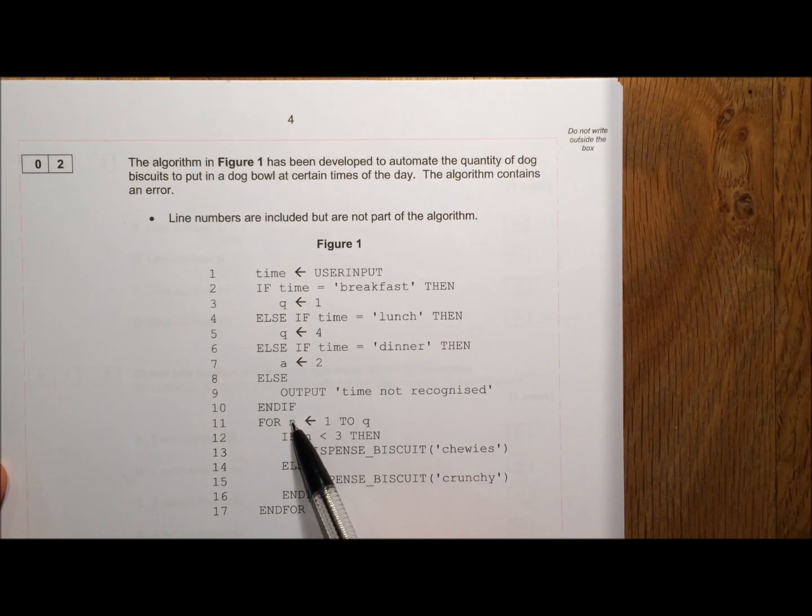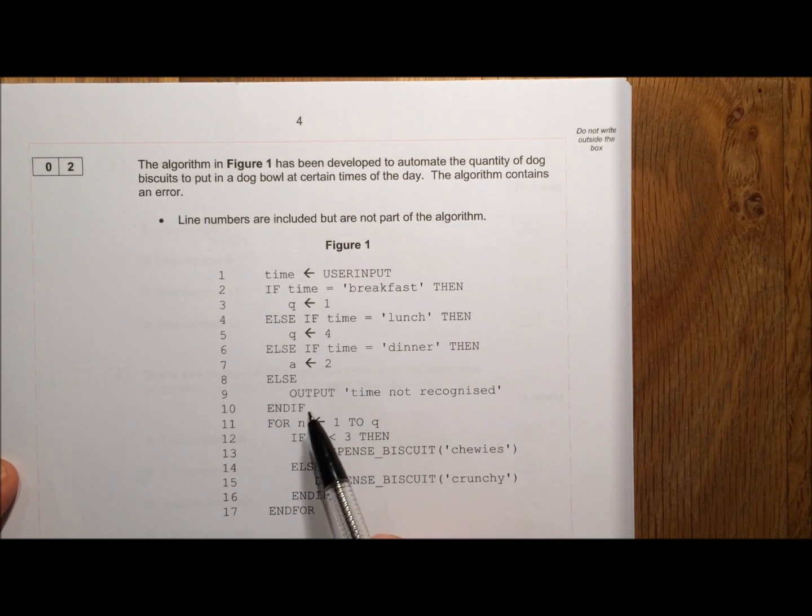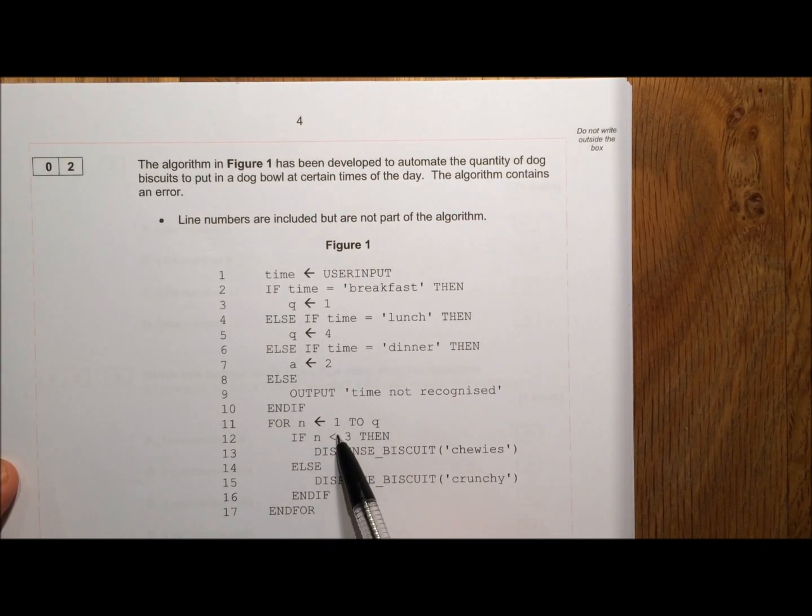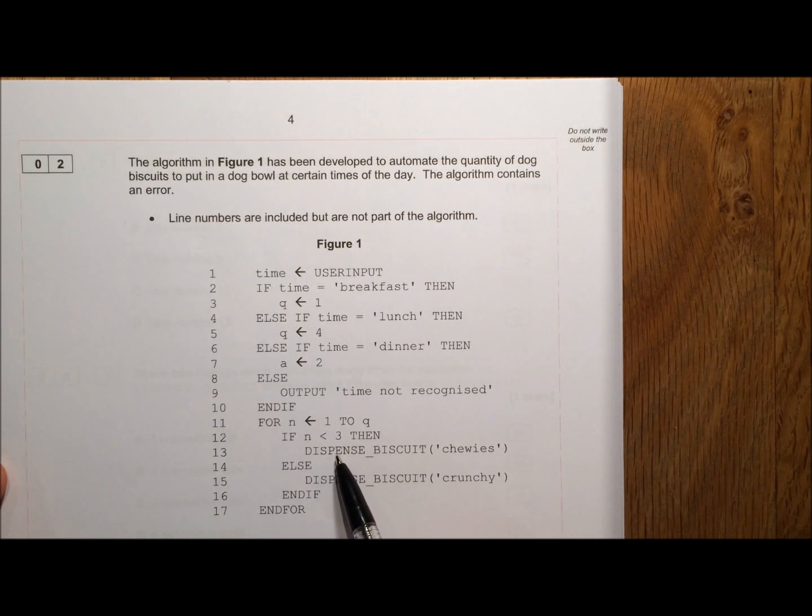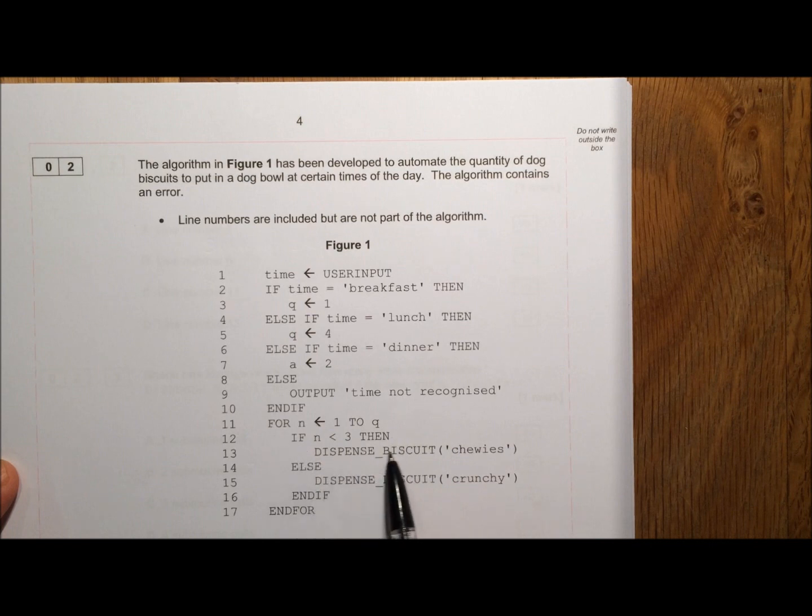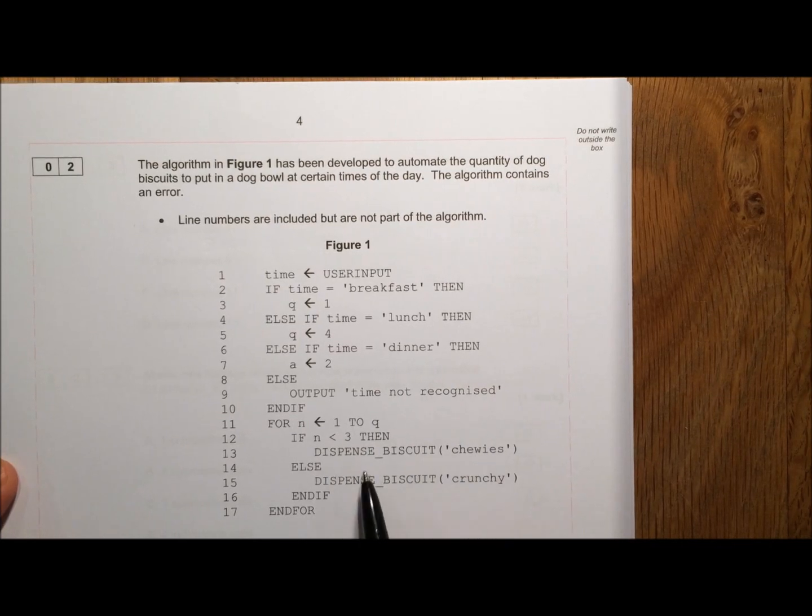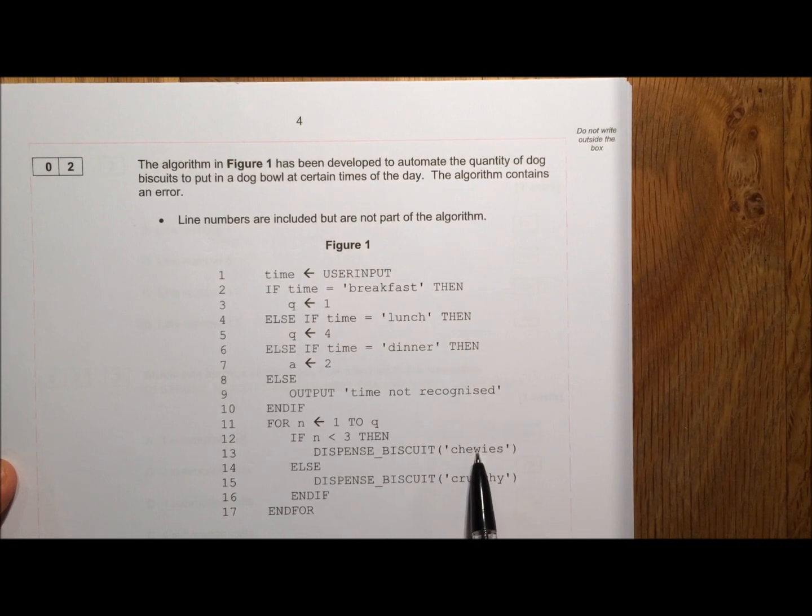If N, which is the number here, which is 1 to start with, then 2, then 3, then 4, and so on. If that number is less than 3, then we dispense biscuit. Now this is some kind of subroutine, a function, in other words another small program somewhere else, and we send it the value chewies. So in other words it's going to go and do that thing, but with the value chewies.